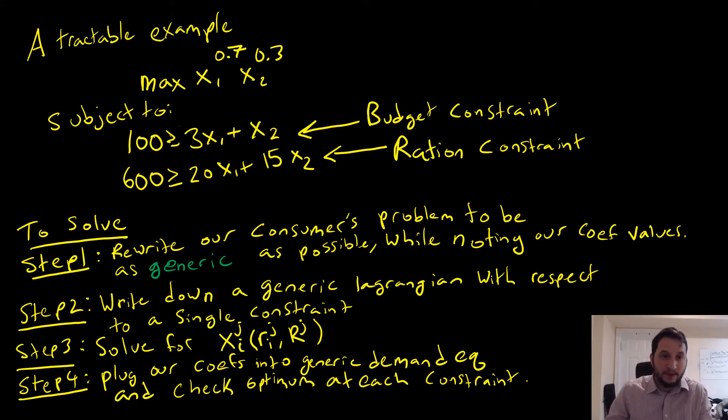And in fact, all our examples from here on out are going to be tractable examples because they're easy to check that way. Without having some assumption on what these values are, we're not going to be able to go and see if these constraints are going to be violated or not at particular optimum.